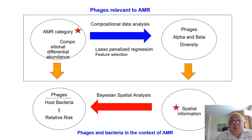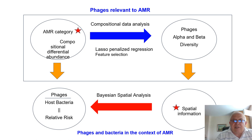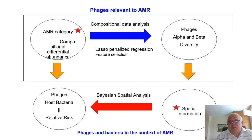The lower level of the pipeline relates to defining phages in bacteria in the context of antimicrobial resistance. We have the ratio between phages and host bacteria, and we adjust this ratio to a so-called relative risk — a parameter borrowed from epidemiology — by applying a Bayesian hierarchical model in the context of Bayesian spatial analysis, and using spatial information from the origin of the sample based on the longitude and latitude of the collected sample.